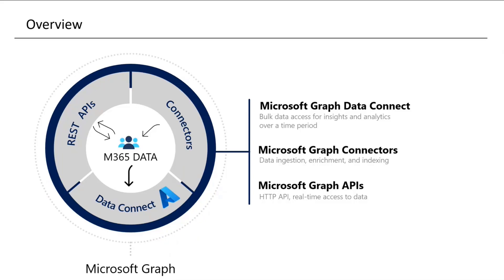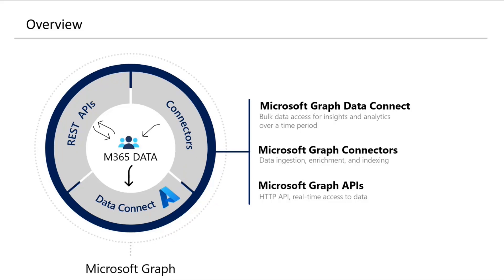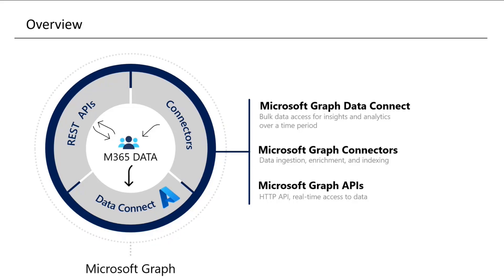The first advantage of using Microsoft Graph Data Connect is you're not subject to throttling, so you can extract a large amount of data — millions of emails or calendar invites — to generate your own insights. The second advantage is you can scope it to an audience, for example only people on the legal and HR team. The third advantage is field-level scoping: you can define a data contract specifying, say, extract emails from the legal team for the past three months and only include the To, CC, and BCC fields.